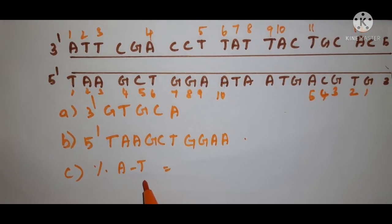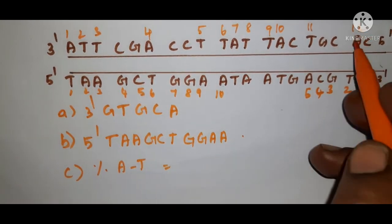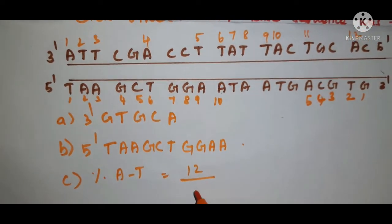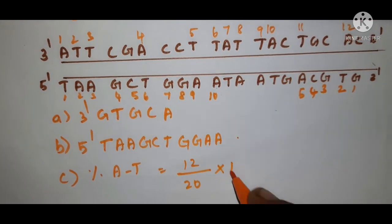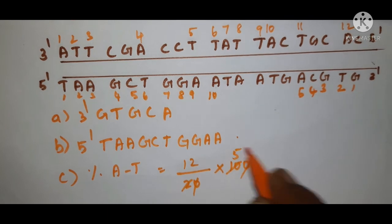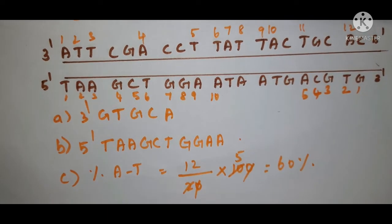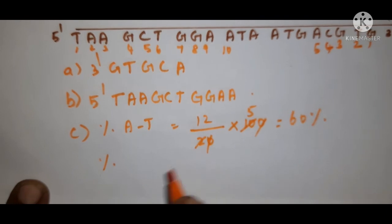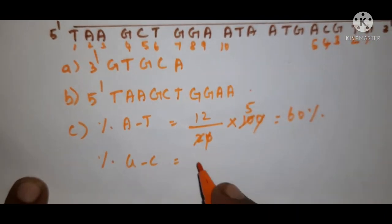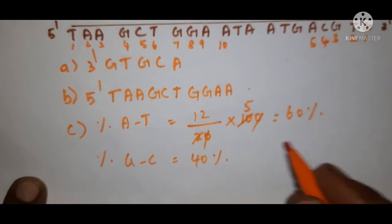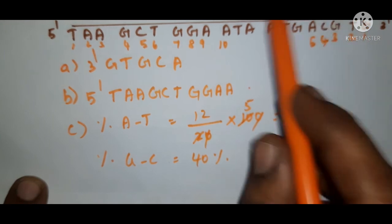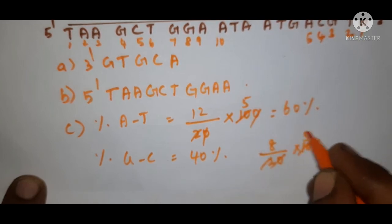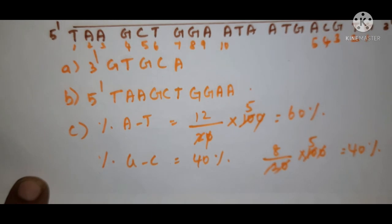Percentage of AT base pair = (number of AT base pairs / total number of bases) × 100 = 12/20 × 100 = 60%. Indirectly, percentage of GC = 100 − 60 = 40%. Or you can calculate directly: remaining bases are 8, so 8/20 × 100 = 40%. Thank you.